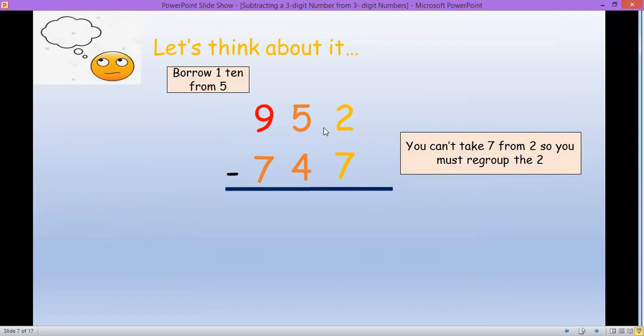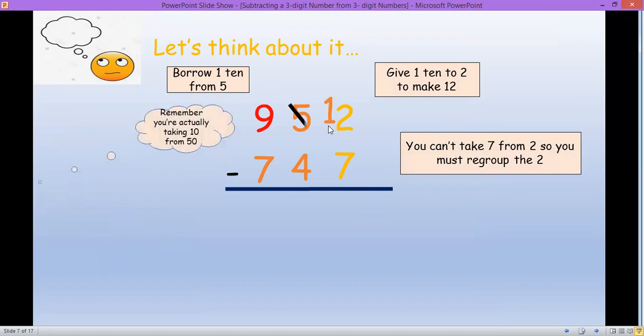Borrow one from five. Well, actually we borrow one ten from five. So give one ten to two to make it 12, and then five will be four. So 12 minus seven is five, and then four minus four is zero, while nine minus seven is two. Any question?